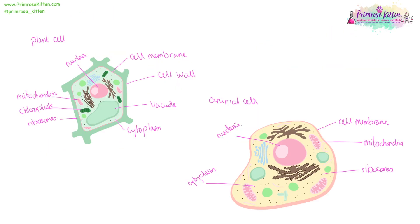You'll notice there are several features of a plant cell that an animal cell doesn't share. For example, the cell wall, the vacuole, and the chloroplasts. If you want a copy of these pictures, you can download them in the free revision guide from my website.